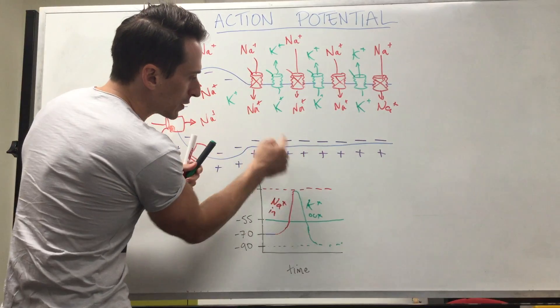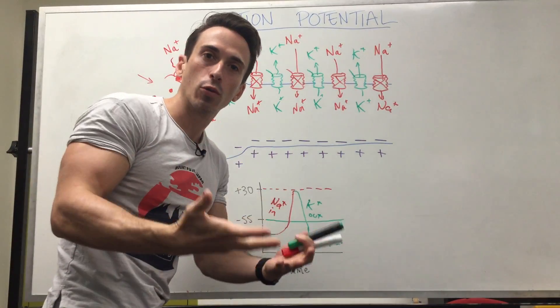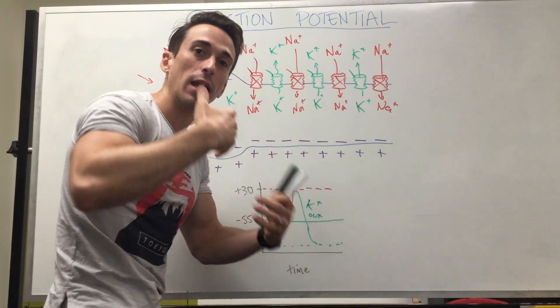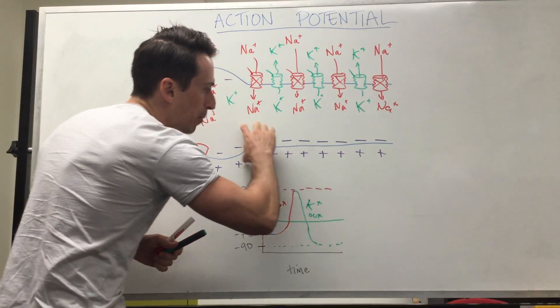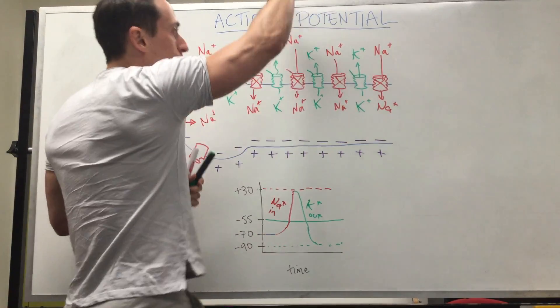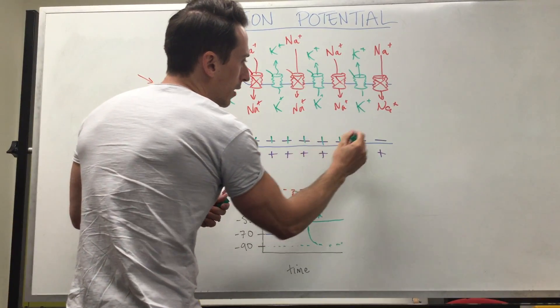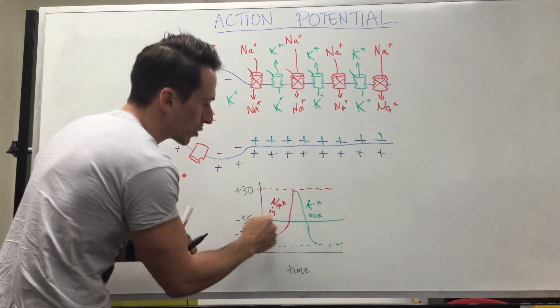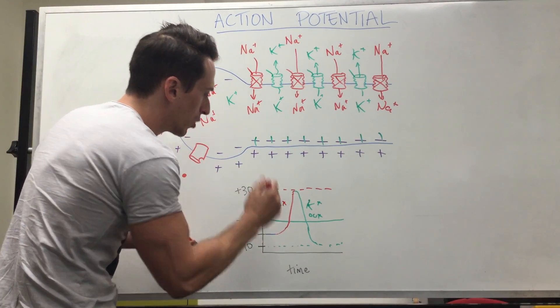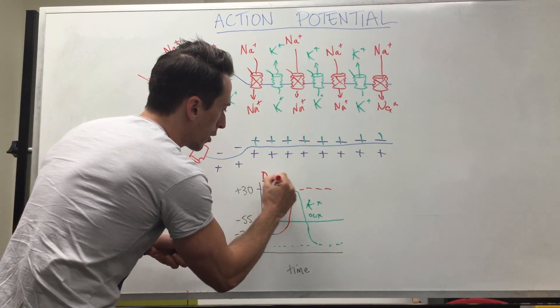When sodium goes in, that's called depolarization. Now remember at rest, negative inside positive outside, that's called polarized. Polarized means differing, okay? Differing on one side to another. So that's a polarized membrane, but when you throw the sodium in you make it positive again inside the neuron, and that's depolarization. So when sodium comes in we term that depolarization.